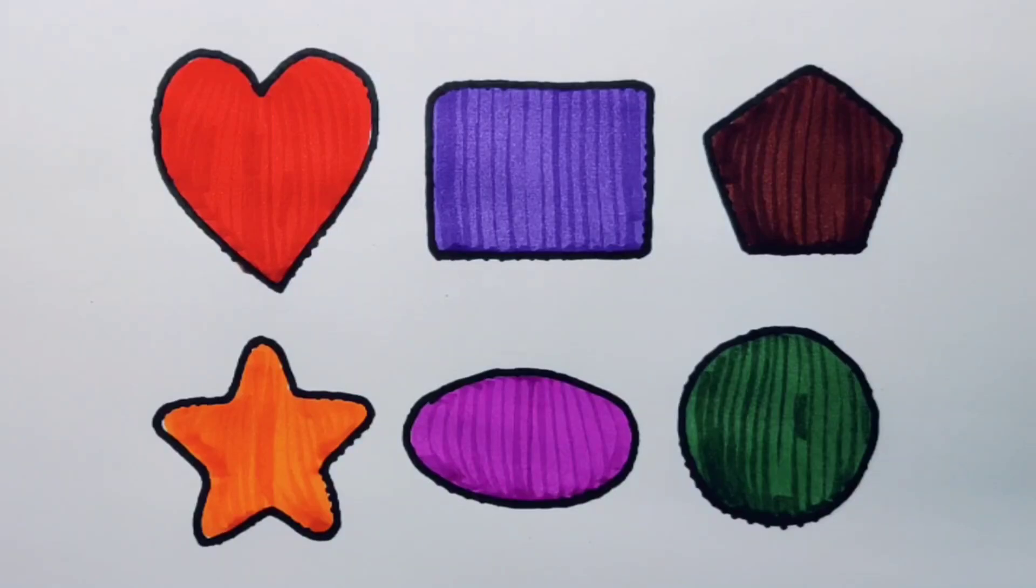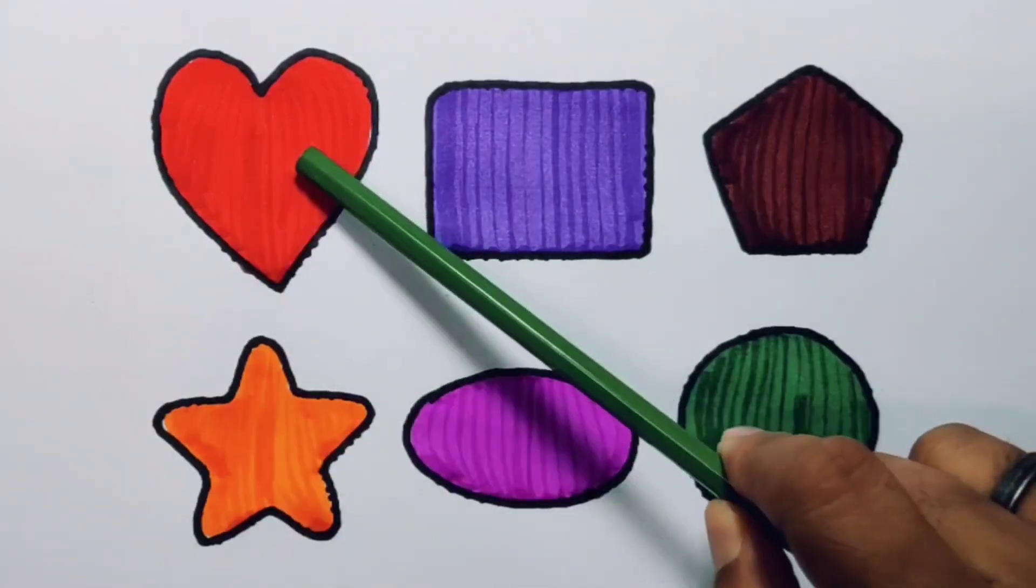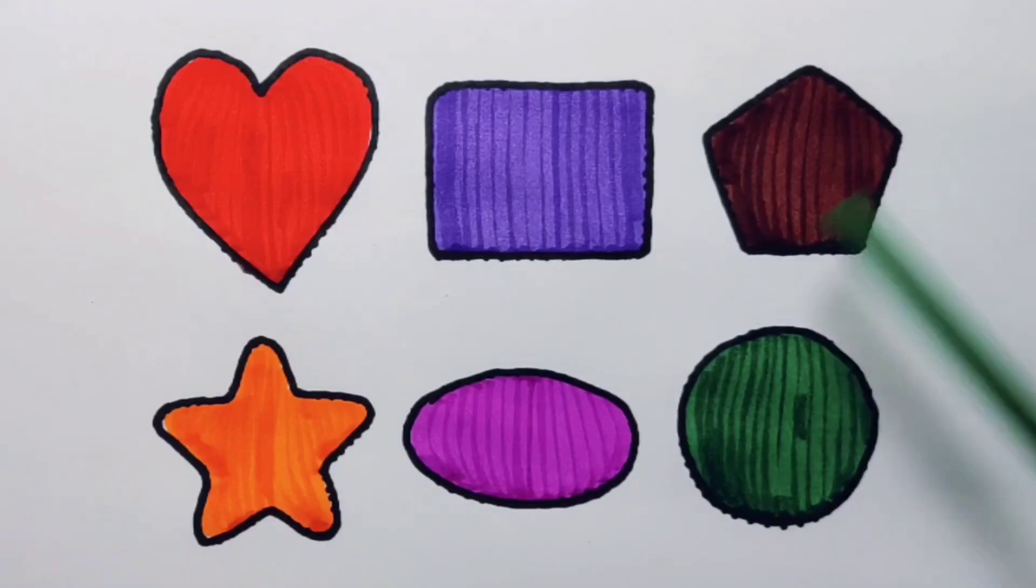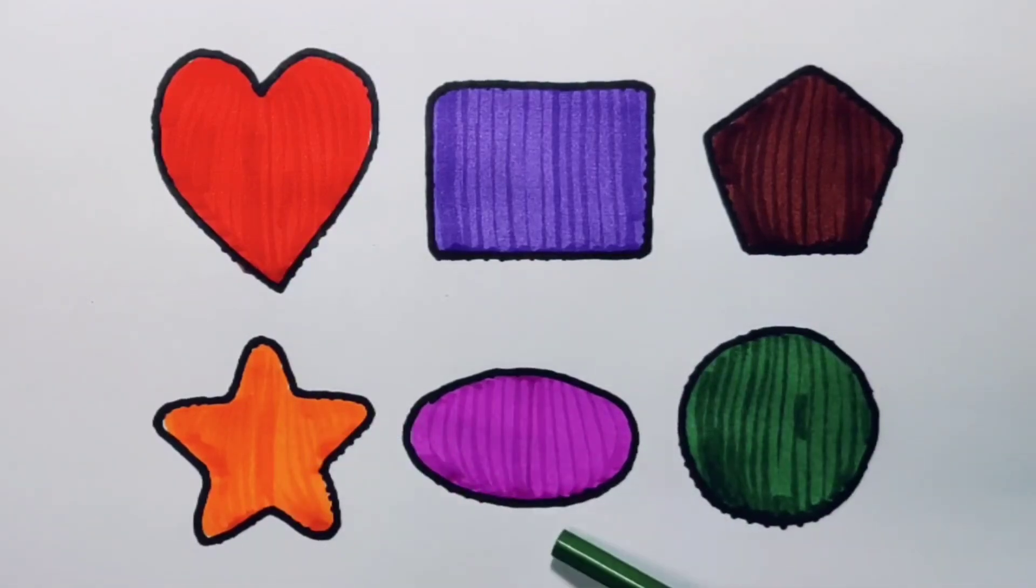What we learned: we learned red color heart, purple color rectangle, chocolate color pentagon, orange color star, pink color oval, green color circle.